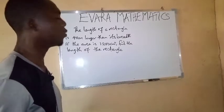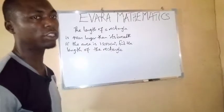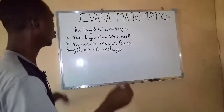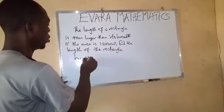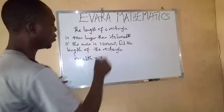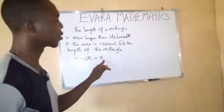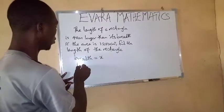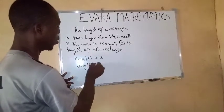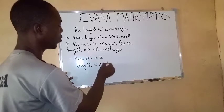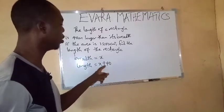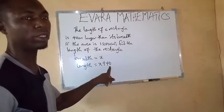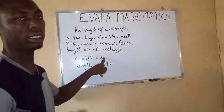The length of the rectangle is 40 cm more than the breadth. So if you represent the breadth by x, it means the length will now be x plus 40. Don't forget that the length is 40 cm more than the breadth.